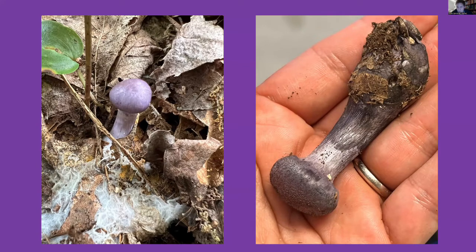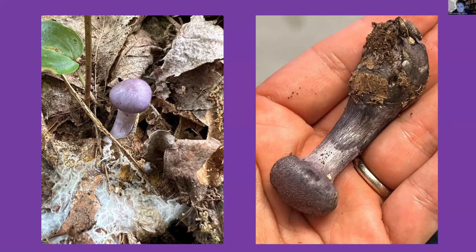The other identifying feature is the color of the spores. One of these is Cortinarius iotes and one is not — can anyone guess which one is Cortinarius iotes? You can write 'left' or 'right' in the chat. We got a couple of lefts, one right, but a lot of lefts. That's correct — the left is indeed Cortinarius iotes.